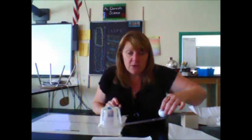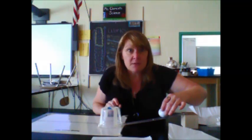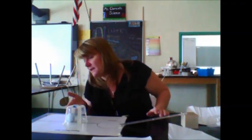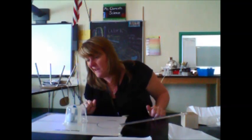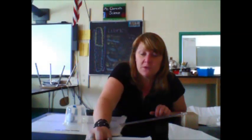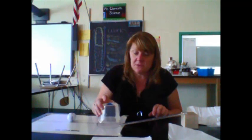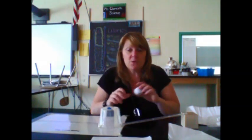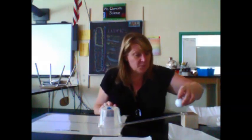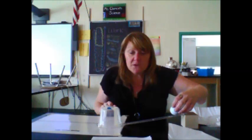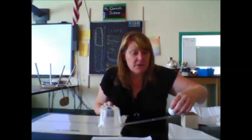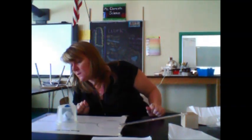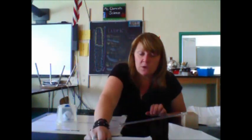Record the distance the cup moves again to the nearest tenth of a centimeter. From 20 centimeters, I release it and look - this time it went 16.8. So I'm going to record 16.8. Then step six: with the cup returned to the starting circle, release the golf ball from the 25 centimeter mark on the ruler. I'm going up to 25 centimeters. This time it's at 21.5, so I'm going to write 21.5.